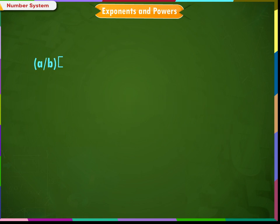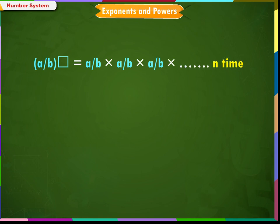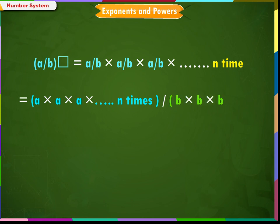Then (a/b) to the power n is equal to (a/b) × (a/b) × (a/b) and so on, n times, which equals a × a × a n times divided by b × b × b n times.